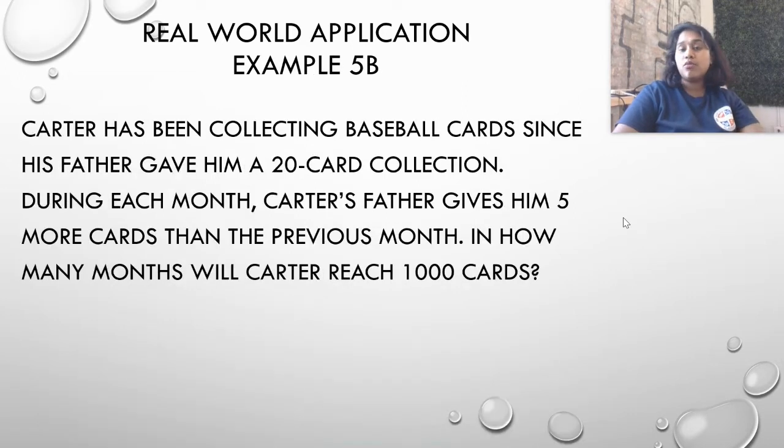Let's do a question that's a little bit more complicated. Carter has been collecting baseball cards since his father gave him a 20-card collection. During every month, Carter's father gives him five more cards than the previous month. So if in January I started with 20, in February he's going to give me 25 more. And then in March he's going to give me 30 more cards. In April 35 more cards. In May, 40, and so on and so forth. So he gives me five more cards than the previous month. He doesn't give five cards each time, if that makes sense how to read that sentence.